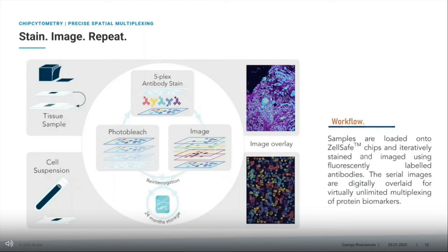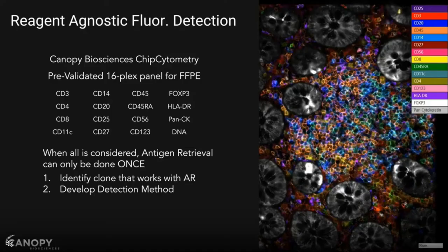Starting with an overview of what we physically do with these samples: we can look at either a cell suspension or alternatively a tissue sample — essentially anything that you can section and put onto a slide, or anything you can pipette. We then go through rounds of five-plex iterations where we stain with five antibodies at a time, image, photo bleach, and image again. At any point in the cycle, you can pull the sample off the instrument and actually store it. For cell suspension, we've done validation data showing storage is actually up to 36 months, because we're using base fluorescence.